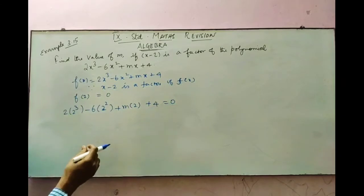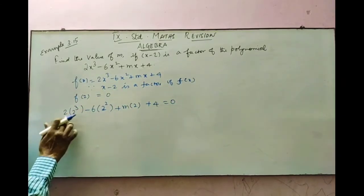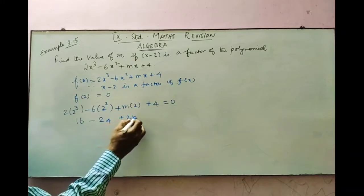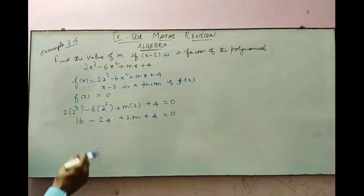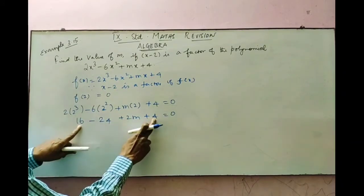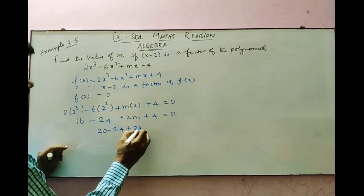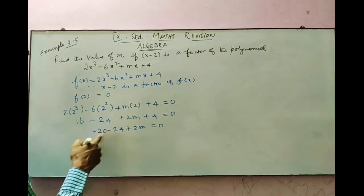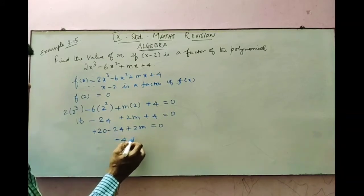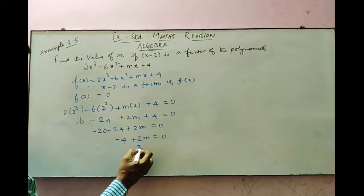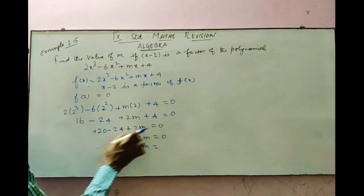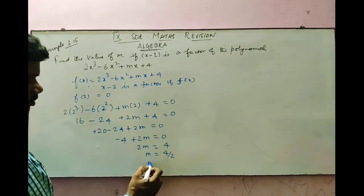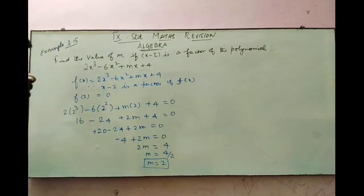Simplify: 2 cubed is 8, times 2 gives 16. 2 squared is 4, times 6 gives 24. So: 16 minus 24 plus 2m plus 4 equals 0. The positive terms: 16 plus 4 gives 20. So 20 minus 24 plus 2m equals 0. Different signs: subtract to get minus 4 plus 2m equals 0. Take minus 4 to the right side — it becomes plus 4. Then divide by 2: m equals 4 by 2, which is 2. So the value of m is 2.